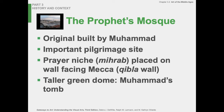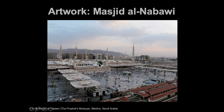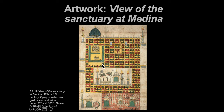There's a tall green dome — this is Muhammad's tomb. This artwork is the view of the sanctuary at Medina. It's a little watercolor — a bit bigger than a miniature — in opaque watercolor, also called gouache, which is watercolor with a little chalk added so it has some opacity and flat color rather than translucency. No humans, no faces — just pattern and shapes.